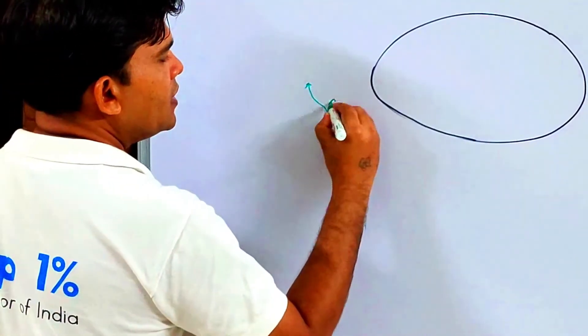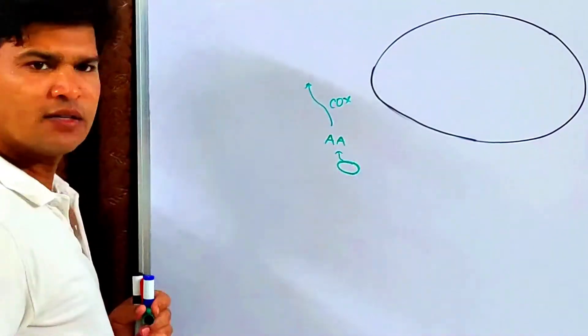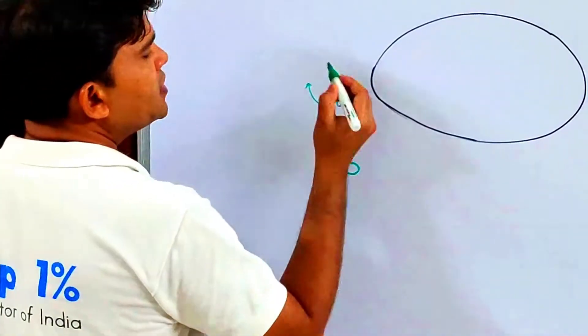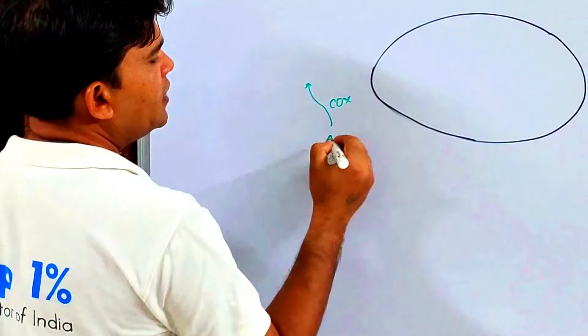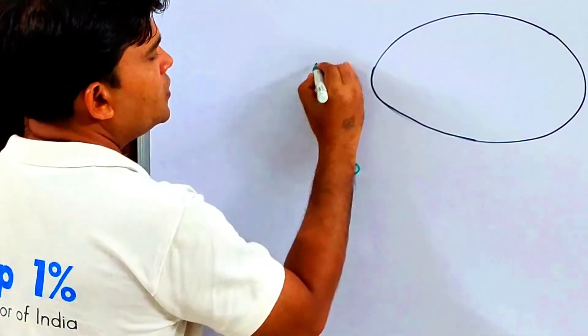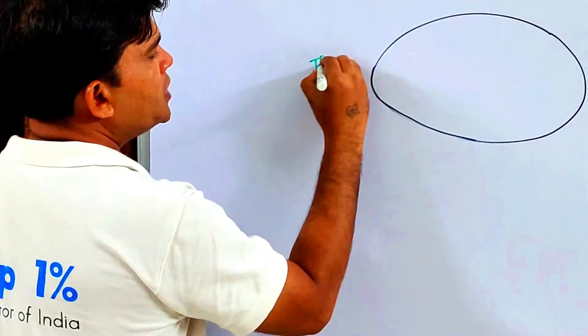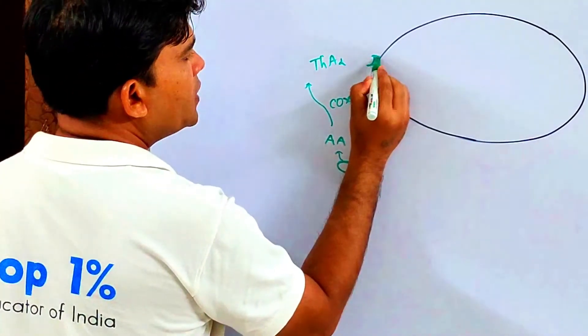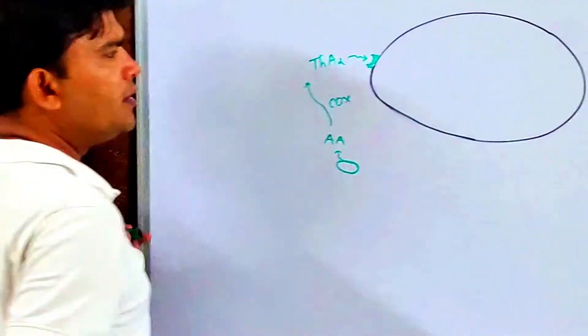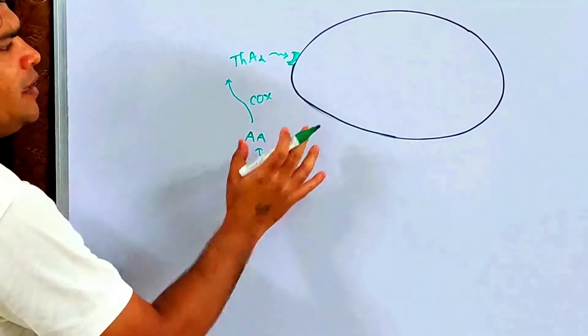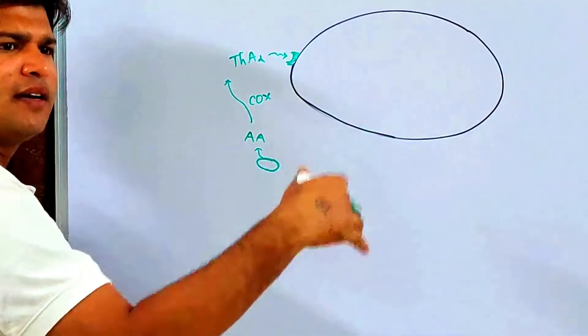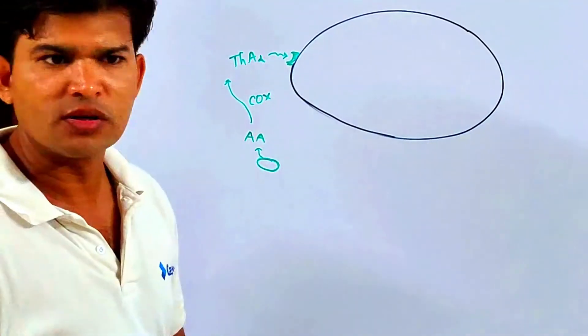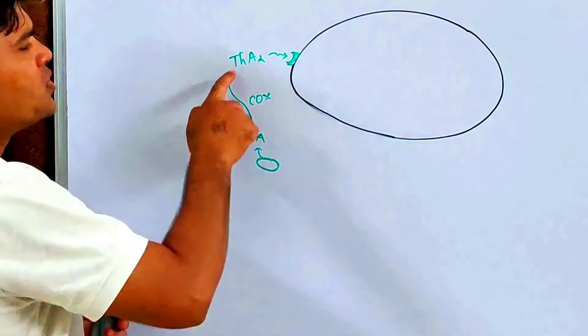And it is processed by cyclooxygenase, specifically COX-1. COX-1 converts arachidonic acid into thromboxane A2, right? And thromboxane A2 binds with the receptor.